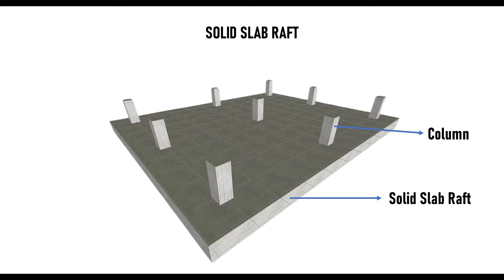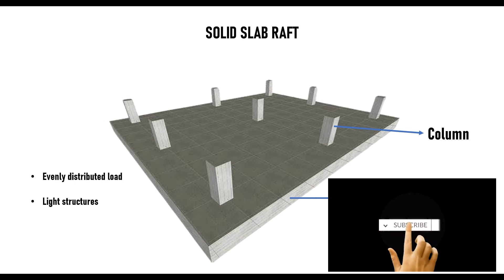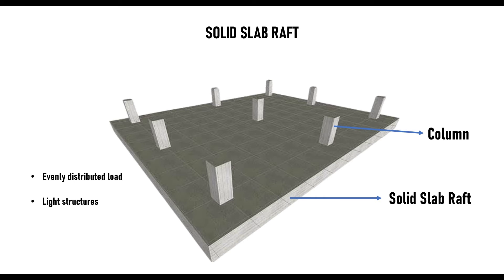The solid slab raft has a simple configuration: a flat slab laid on the ground, with columns taking the load from the superstructure. The flat slab is the foundation — it takes the load from the columns and spreads it to the ground. This type is most useful when you have a regular spacing between columns and when the load on the columns is evenly distributed. It is mainly used for light structures. For heavy structures, the load from the columns would be so large that the required slab depth could reach 1 meter or 600 millimeters, which would be uneconomical to construct.